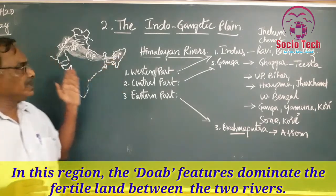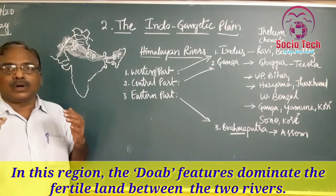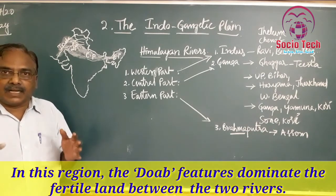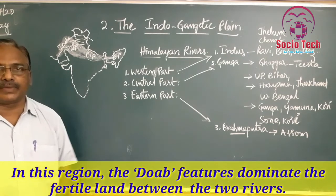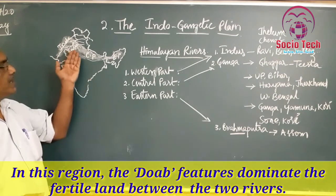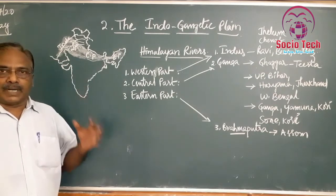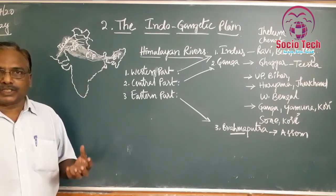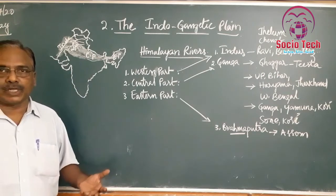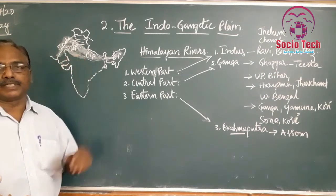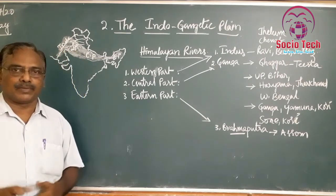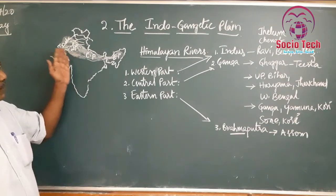We can see Doab features here. Doab means the fertile land between two rivers — the rich fertile land between two rivers is known as Doab. For example, the name Punjab is derived from 'Panch aab,' meaning five rivers. There is a Punjab in Pakistan and a Punjab state in India as well.